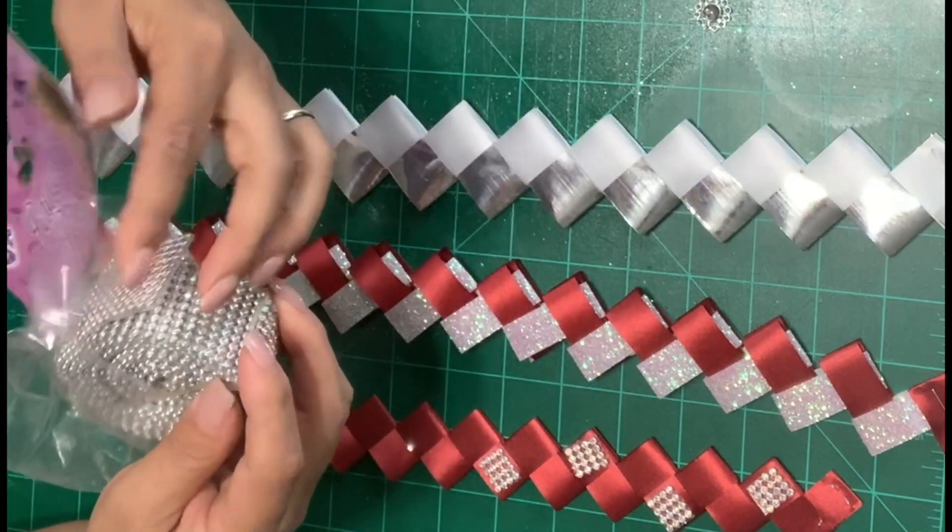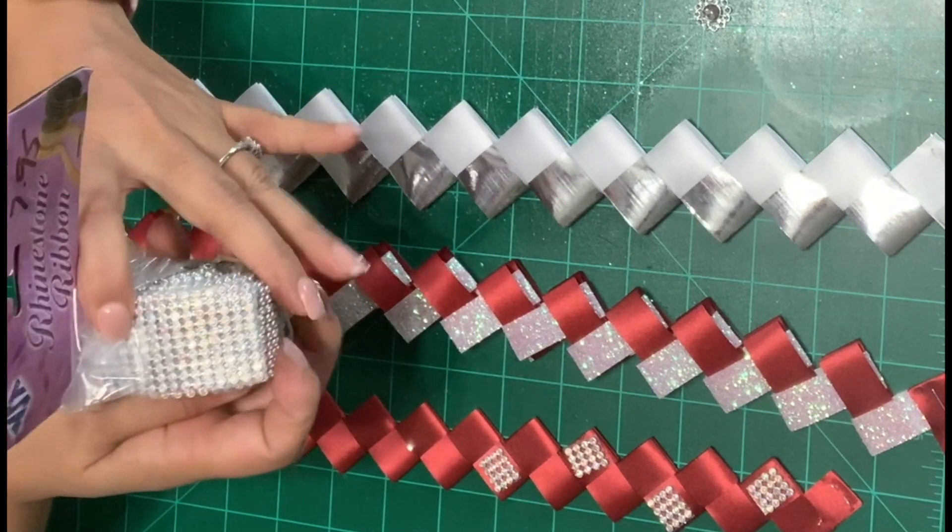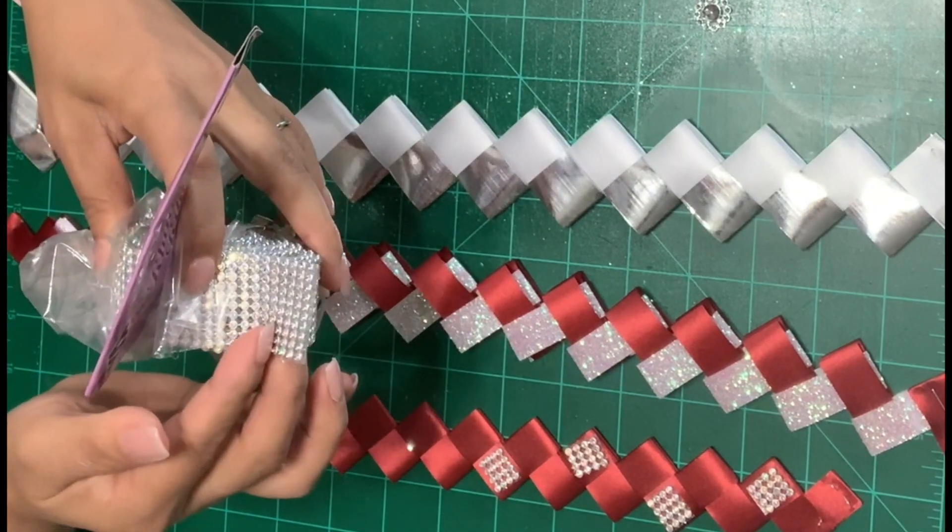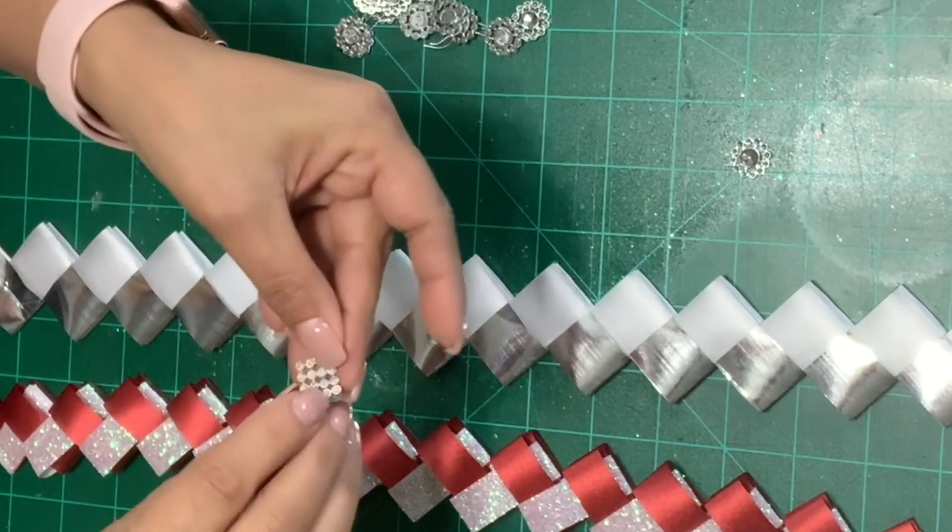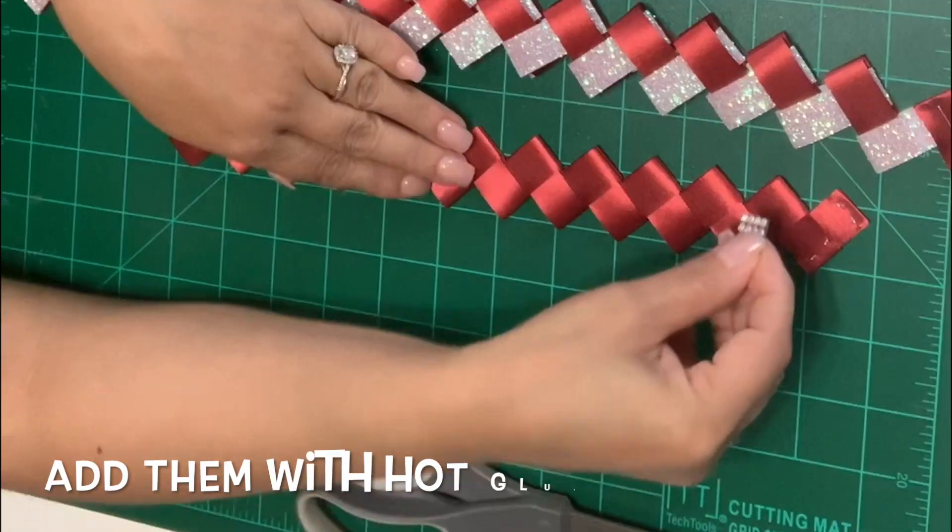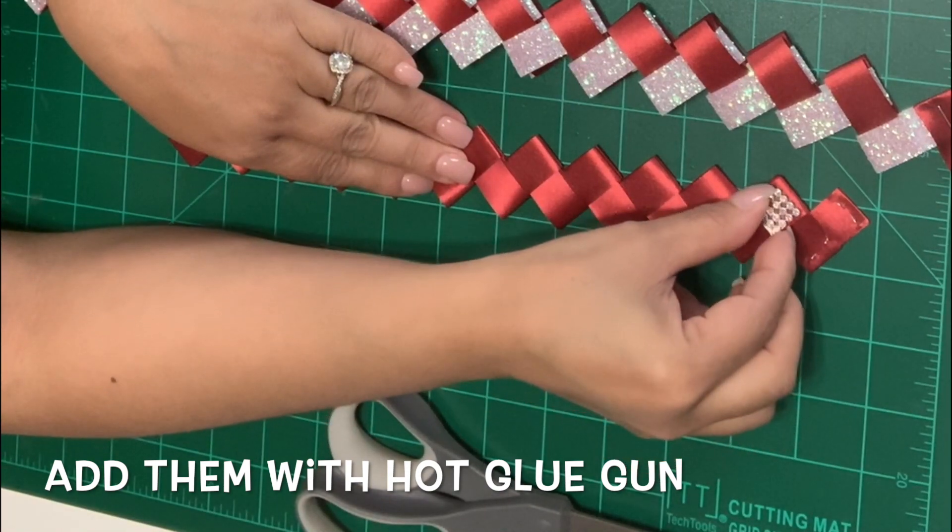I also bought this roll of rhinestones at Travis Wholesale. Again I've seen them in other places as well. This one was $7.95 and it's got quite a bit in here and you basically cut them to the size that you need. In my case I ended up cutting little squares like this and I added them to my orange chain.